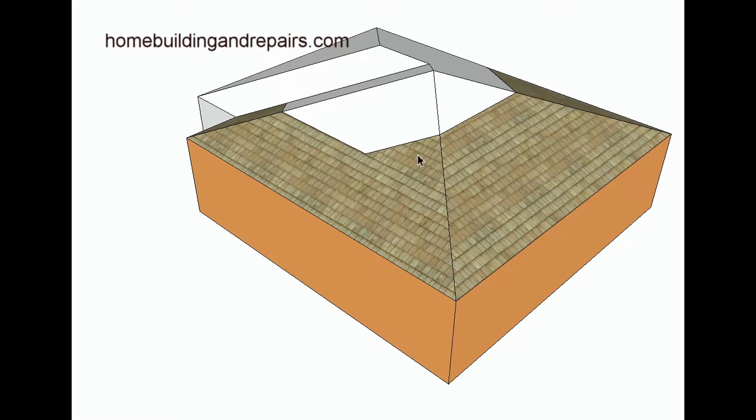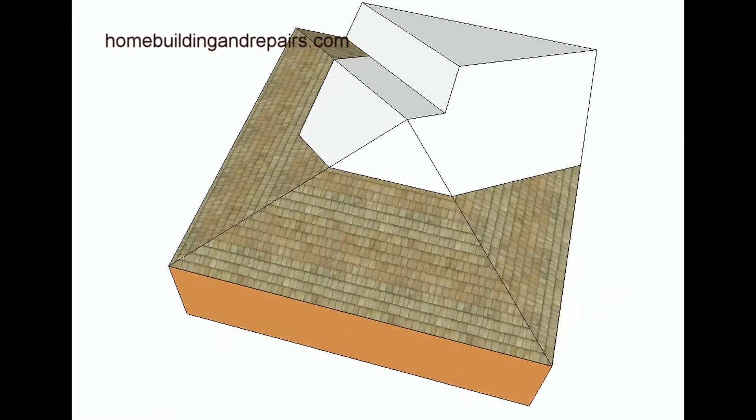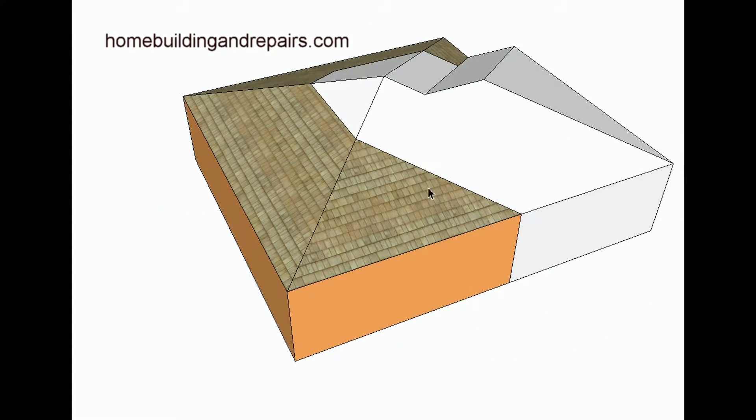And this whole section of the roof would be a flat plane. This would be a flat plane. When I say a flat plane, this would all blend in. So this would be one side of the hip roof.